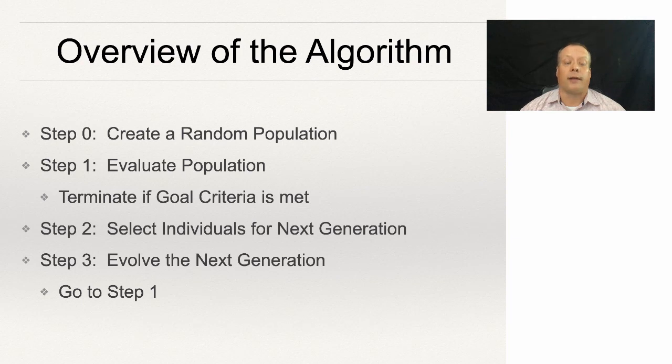In this talk we're going to discuss the actual steps of the genetic algorithm. Here's the overview of the algorithm. Step zero: create a random population. Step one: evaluate the individuals in that population—how well do each do at solving the problem? Now it might be possible even in that first step you identify an individual that perfectly solves the problem, and if that's the case, terminate.